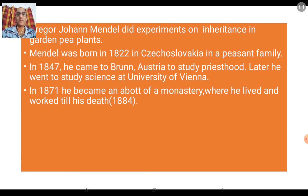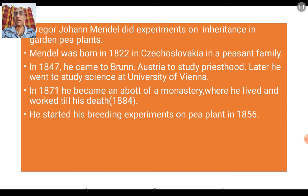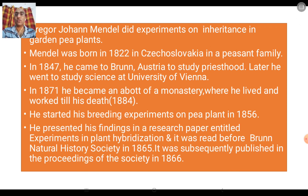In 1871 he became an abbot — that is, head of a monastery — where he lived and worked until his death in 1884. During his time in the monastery he started all his work. His breeding experiments on the pea plant began in 1856 and took him around eight years to complete.